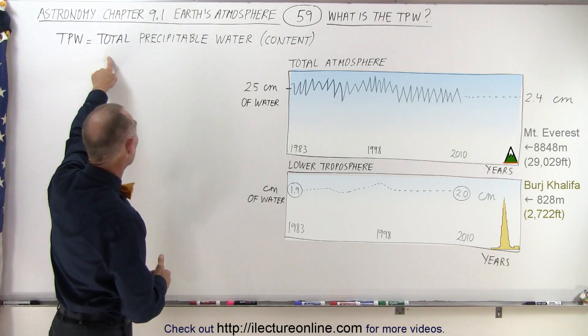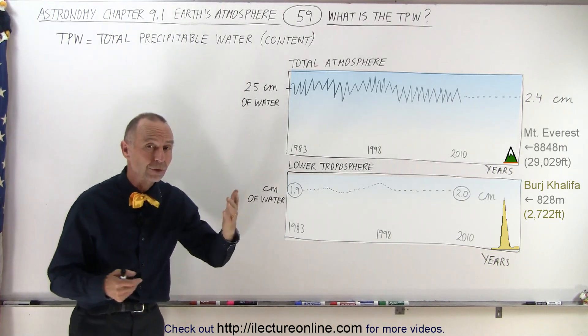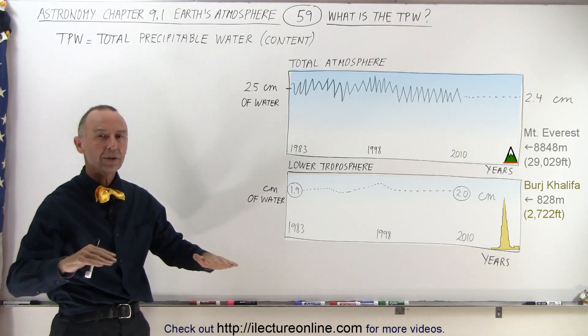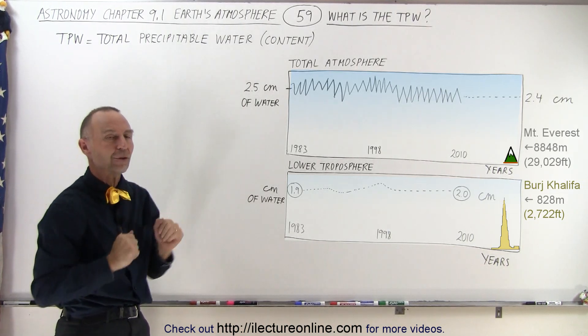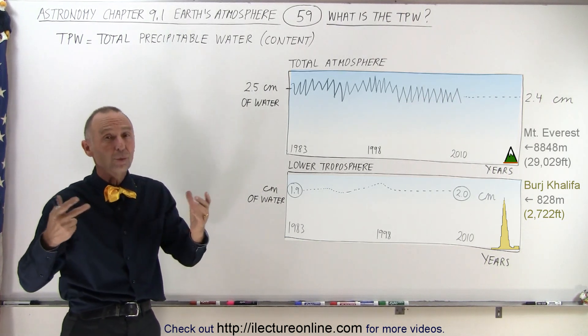Well, it turns out it stands for the total precipitable water content. In other words, if all the water in the atmosphere were to come down all at once, we'd have a certain amount of water on the surface, and the amount is about two and a half centimeters, which is one inch.